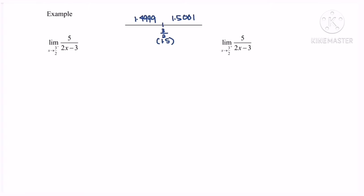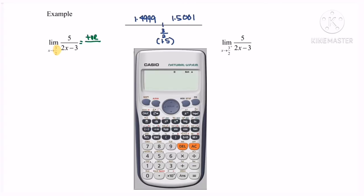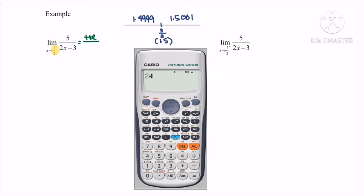For the left-hand side, given x approaching 3/2 from the left, if we substitute the value we will obtain a positive value for the numerator. For the denominator, using the calculator with the function 2x minus 3 and substituting 1.4999, we get a negative value. So the limit when x approaches 3/2 from the left for the function 5 over (2x minus 3) is negative infinity.